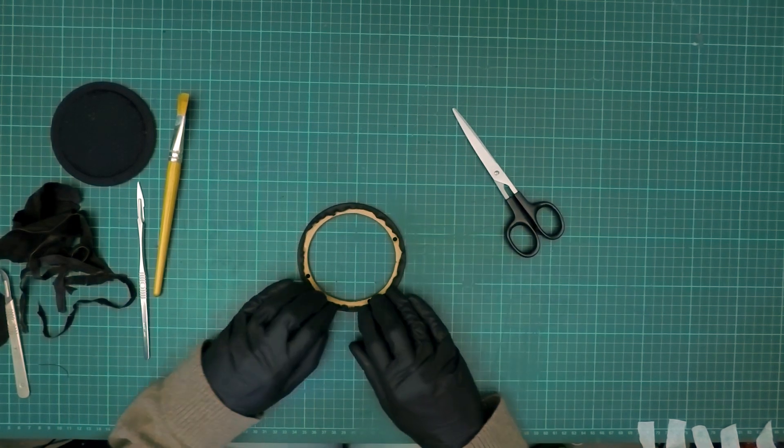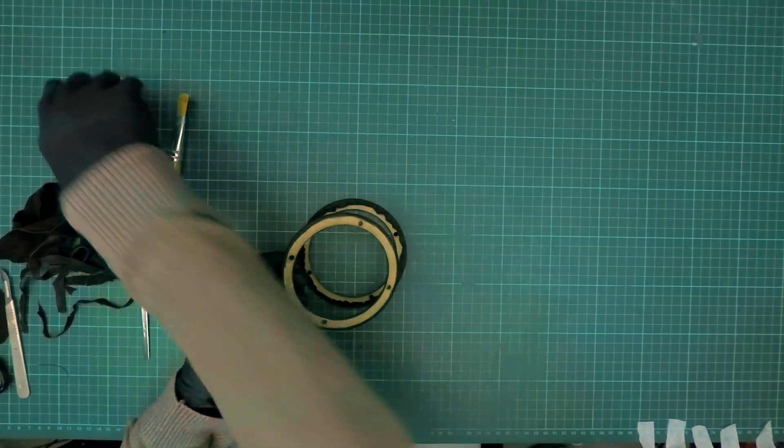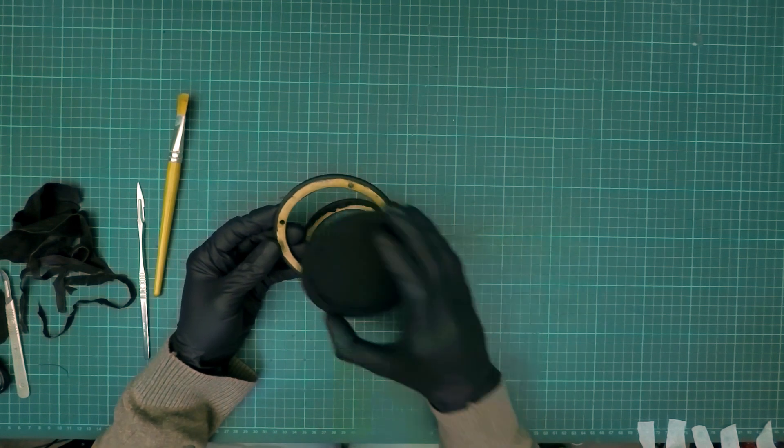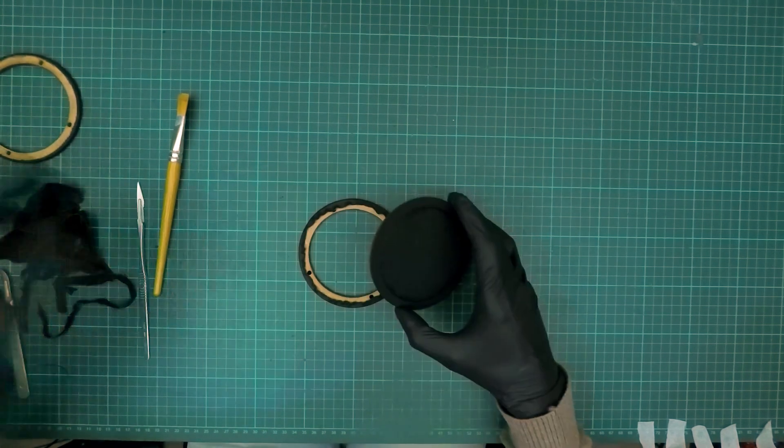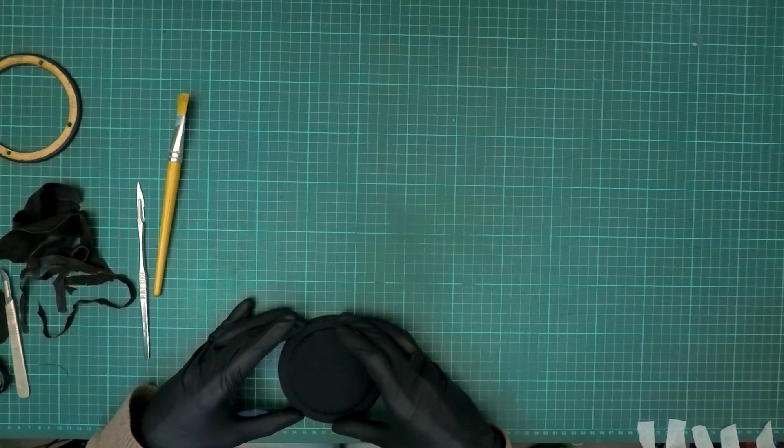To achieve the perfect circular trim of the excess leather as shown here, we will be using the back plate as a guide. Simply center the back plate to the leather wrapped front ring.